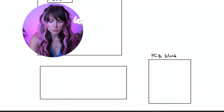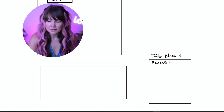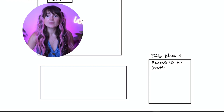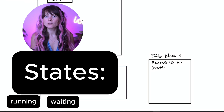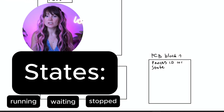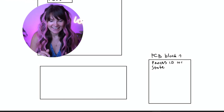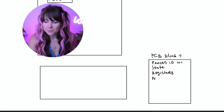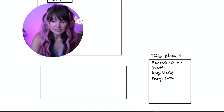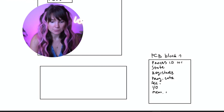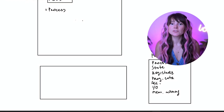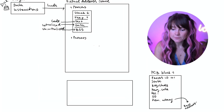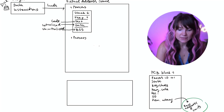The process control block contains all the necessary details to manage and track the process, including: first, a process ID or PID, which is a unique identifier for the process. Then we have the process state, which indicates the current state — running, waiting, or stuck. Next are the CPU registers and their contents, then the program counter with the address of the next instruction. It also stores information about accounting, I/O status, and memory management. Memory management stores information related to the process's memory layout, containing base addresses and limits for different memory segments like the stack, heap, text, BSS, and data.